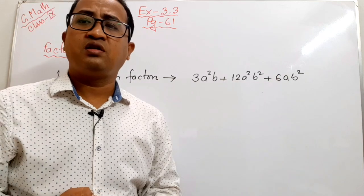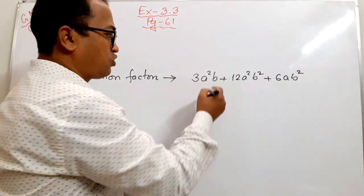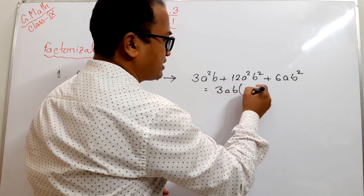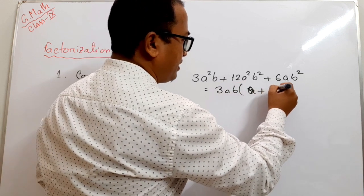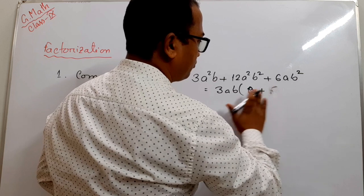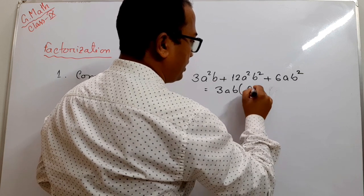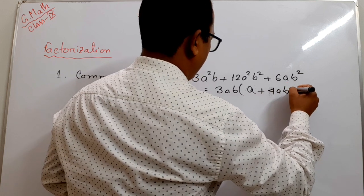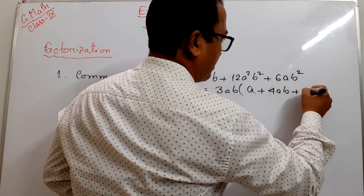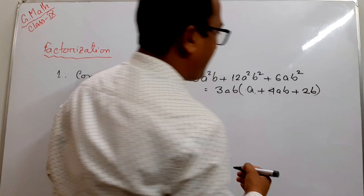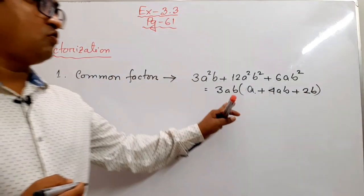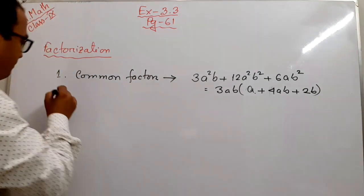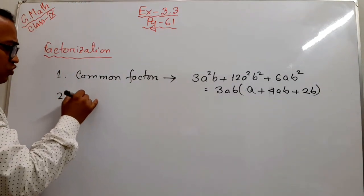Here, 3ab is common in all the terms. So the factorized form is 3ab(a + 4ab + 2b). This is one kind of factorization — taking out the common factor.